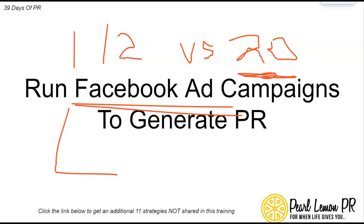Facebook has got a huge user base and really targeted ad potential. You can use Facebook to also run campaigns on Instagram. Fundamentally, it's just a good consideration when it comes to trying to get in front of journalists, especially if you want to connect with journalists that have got similar interests personally or professionally, because that's going to help you a ton.